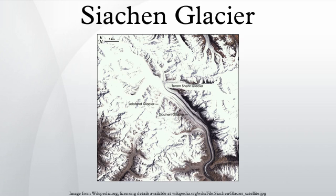The Siachen Glacier is located in the eastern Karakoram Range in the Himalaya Mountains at approximately 35.421226°N, 77.109540°E, just northeast of the point NJ 9842 where the line of control between India and Pakistan ends.